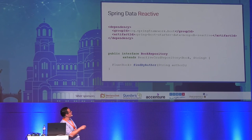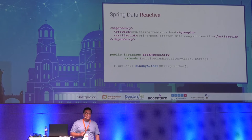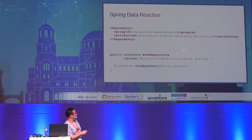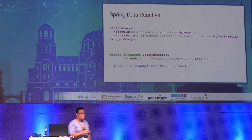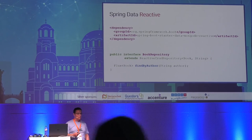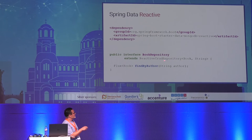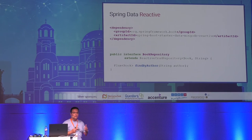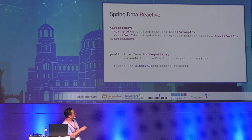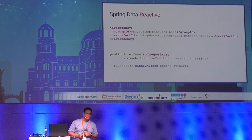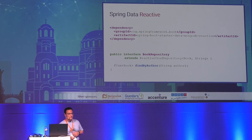In the Spring Data project, there are reactive CRUD repositories — an extension of the standard CRUD repository where Flux or Mono are returned as method return types. If you are familiar with Spring Data, you can also construct repository interface methods in the same way — for example, findByAuthor will search by author name from the book object.